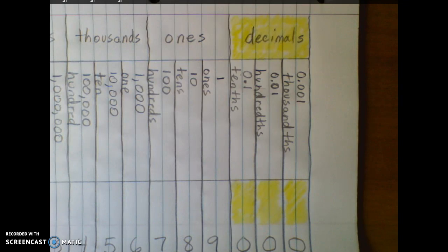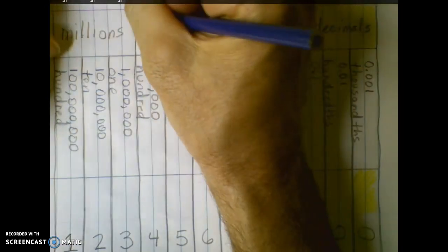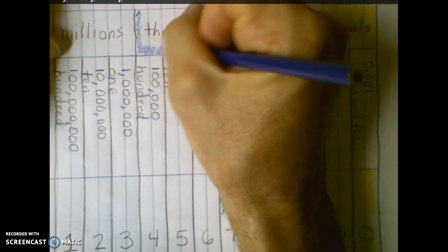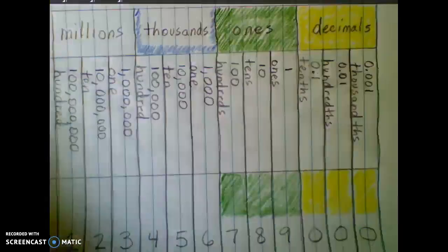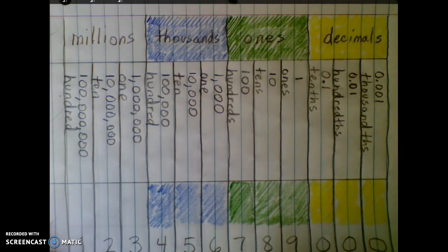We'll put blue in for the thousands place and finish with red for the millions place.